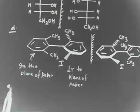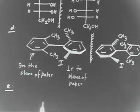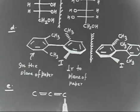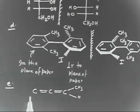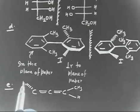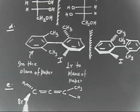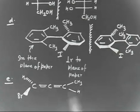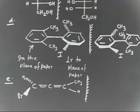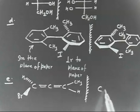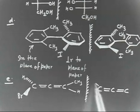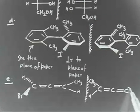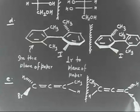For the next molecule E, you have C=C=C=C with CH3 and hydrogen on one end, and hydrogen and bromine on the other end. This is an allene-type system. Some bonds are in the plane, one going down and one coming up. The mirror image has C=C=C with CH3, hydrogen going down, and bromine coming forward.